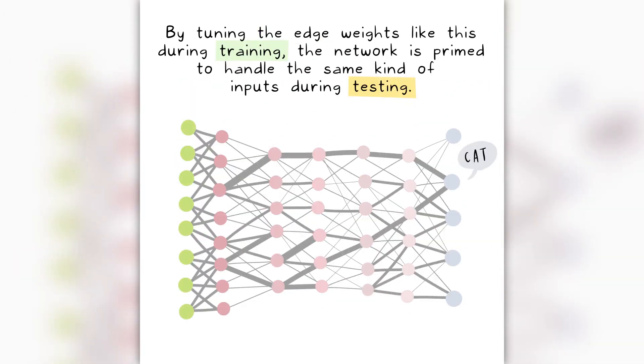By tuning the edge weights like this during training, the network is primed to handle the same kind of inputs during testing.